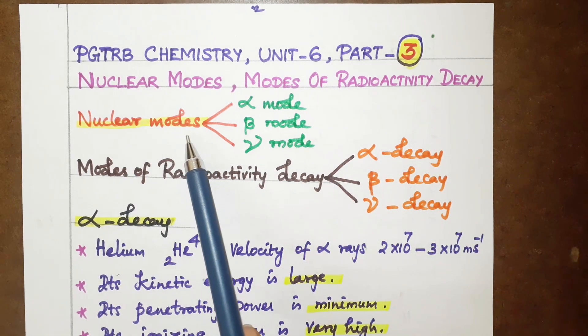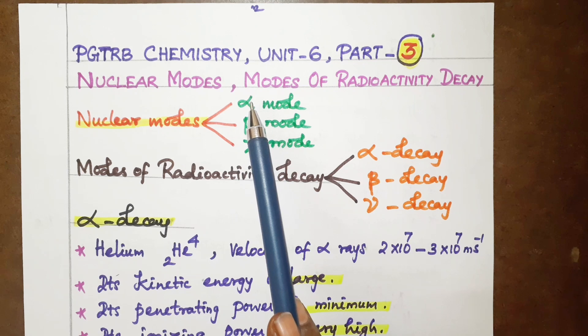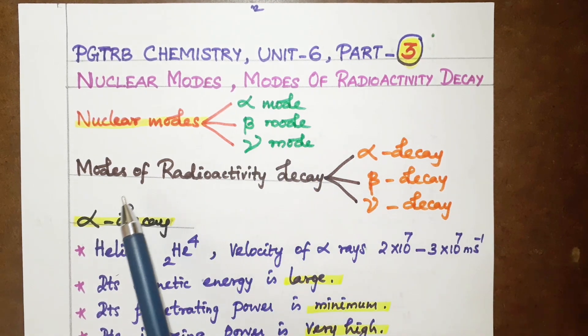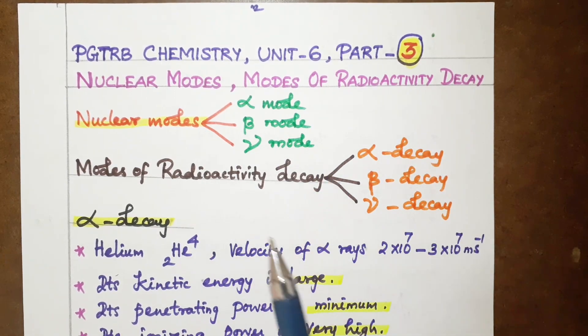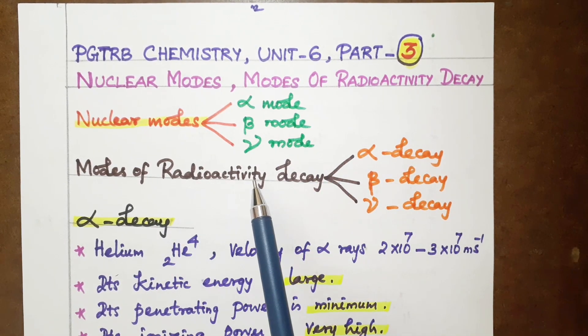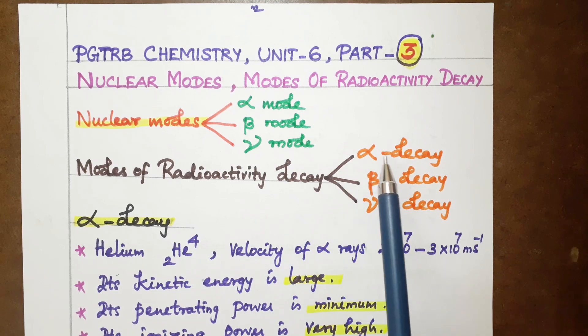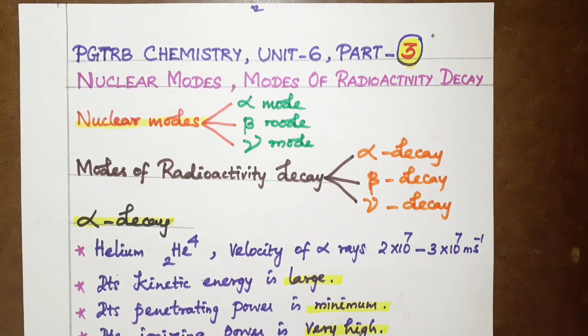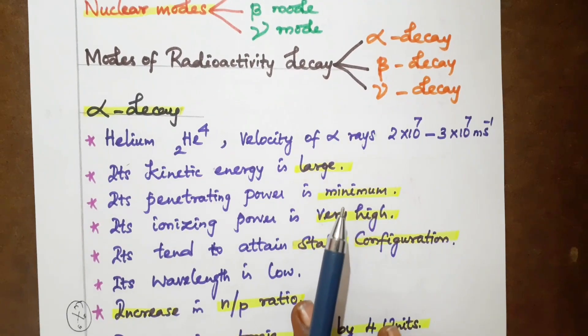Nuclear modes are classified as alpha, beta, and gamma. This is the UG level. Modes of radioactivity decay are how the radioactivity decay occurs: alpha rays, beta rays, and gamma rays. So what are the properties of the alpha?